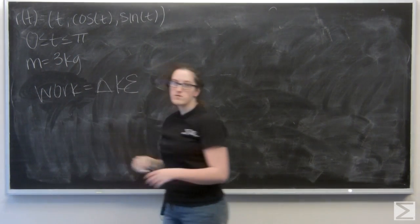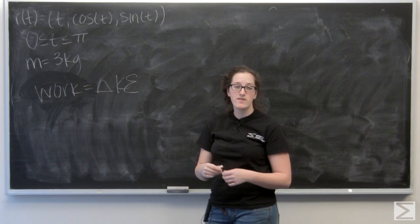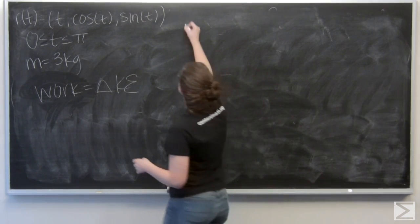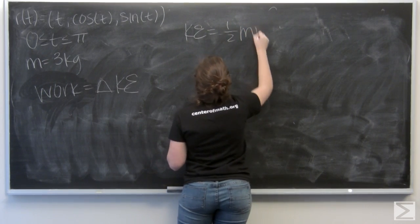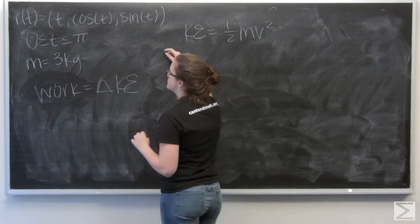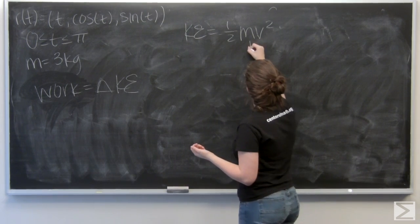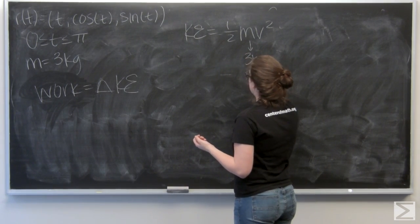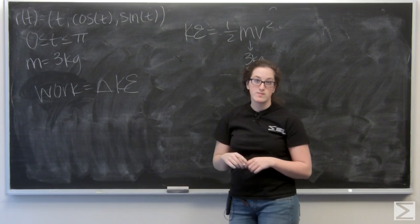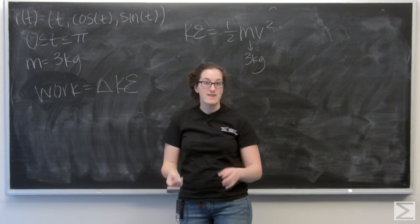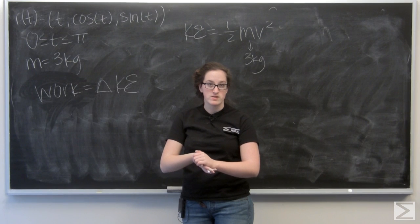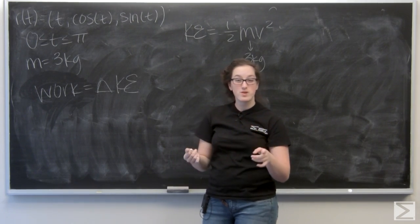And let's recall the formula for kinetic energy. It's one-half mass times velocity squared. Well, I'm given a mass, right? Three kilograms. And I'm not given velocity, but I am given position. So, I could take the derivative and then find the magnitude of that vector to get velocity. So, let's go ahead and do that.